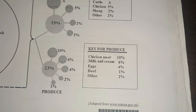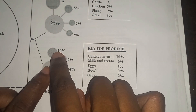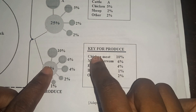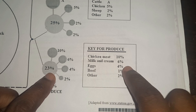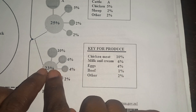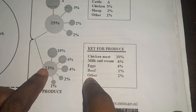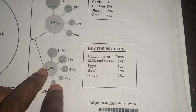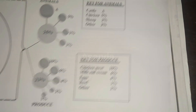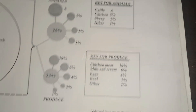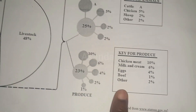For produce, which is the 23 percent: chicken meat is 10 percent, milk and cream is 6 percent, eggs is 4 percent, beef is 1 percent, and other makes up 2 percent.